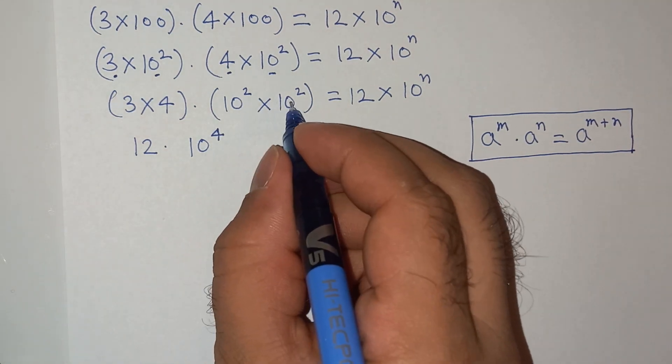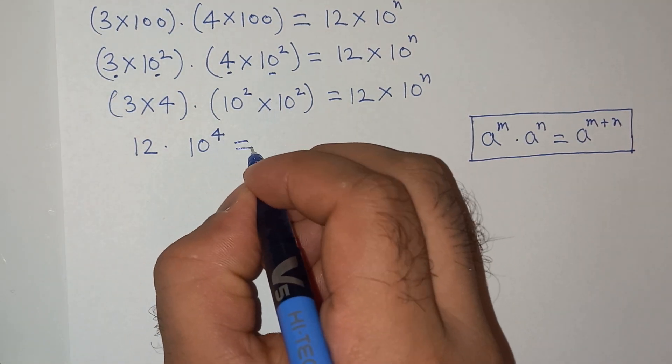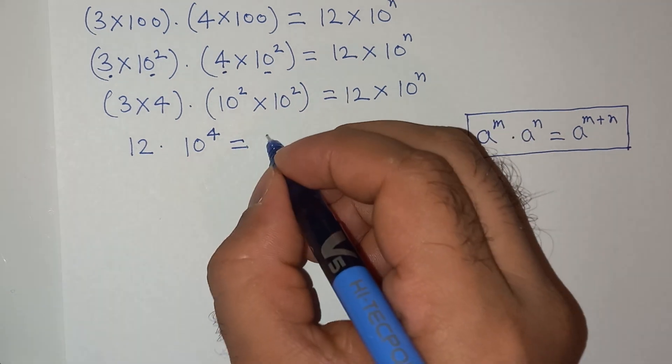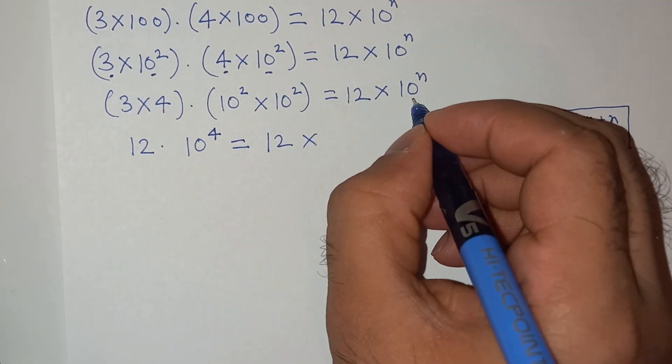So this will be 10 square multiplied by 10 square will be 10 power 4, equals 12 multiplied by 10 power n.